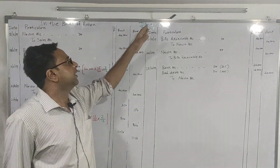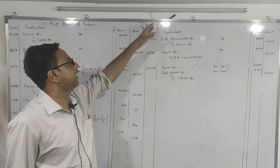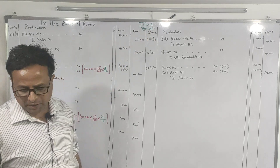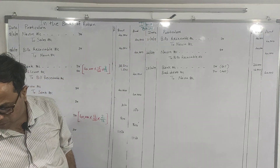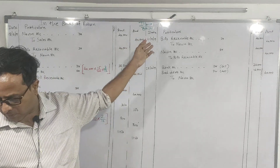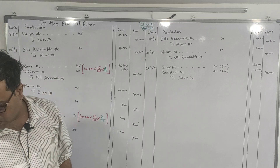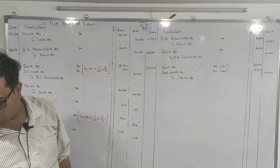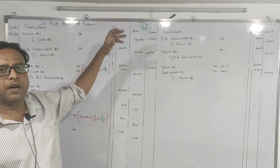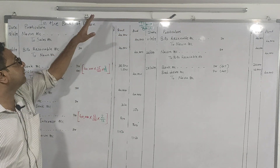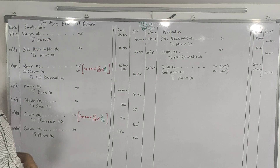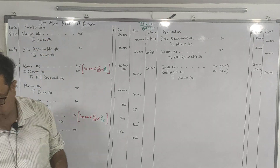We are starting with Illustration 10 of Bills of Exchange on page number 291. In the textbook they have asked us to draw journal entries in the books of Navin, that is in the books of the drawee. But for the purpose of practice we are passing the entries in the books of the drawer, that is Rohan.